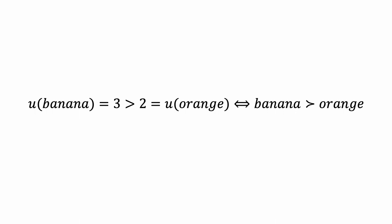Again, following from the above, u(banana) equals three, which is greater than two, equals u(orange). This implies that banana is strongly preferred to orange.